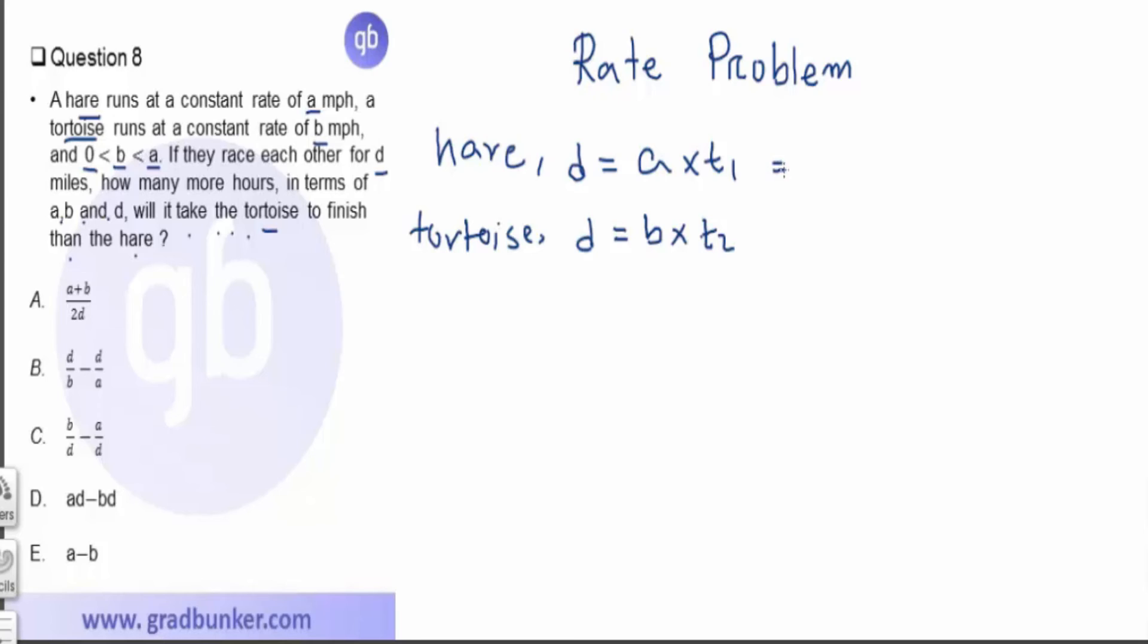So t₁ is equal to D divided by A, and t₂ is equal to D divided by B.